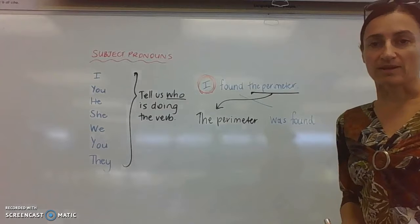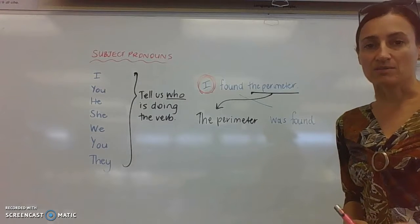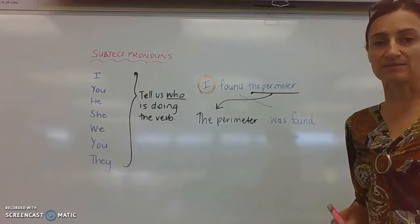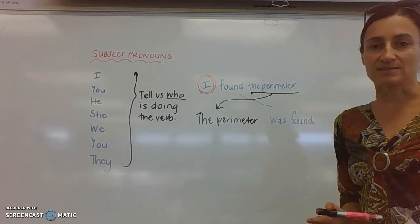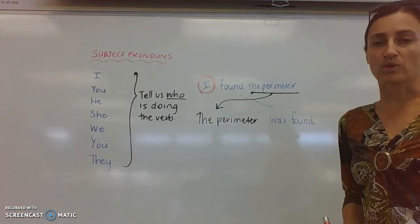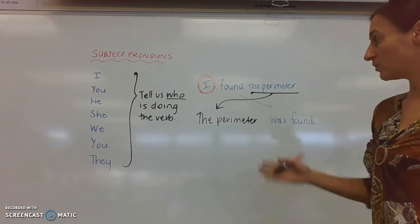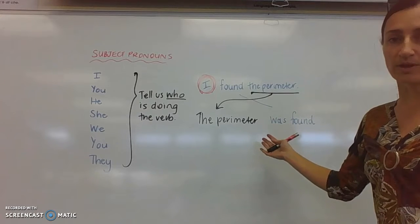And we want this piece of writing to be impersonal, which means the person that did the action needs to disappear from the sentence. We're not interested in who did something, we're interested in what was done, not by whom.